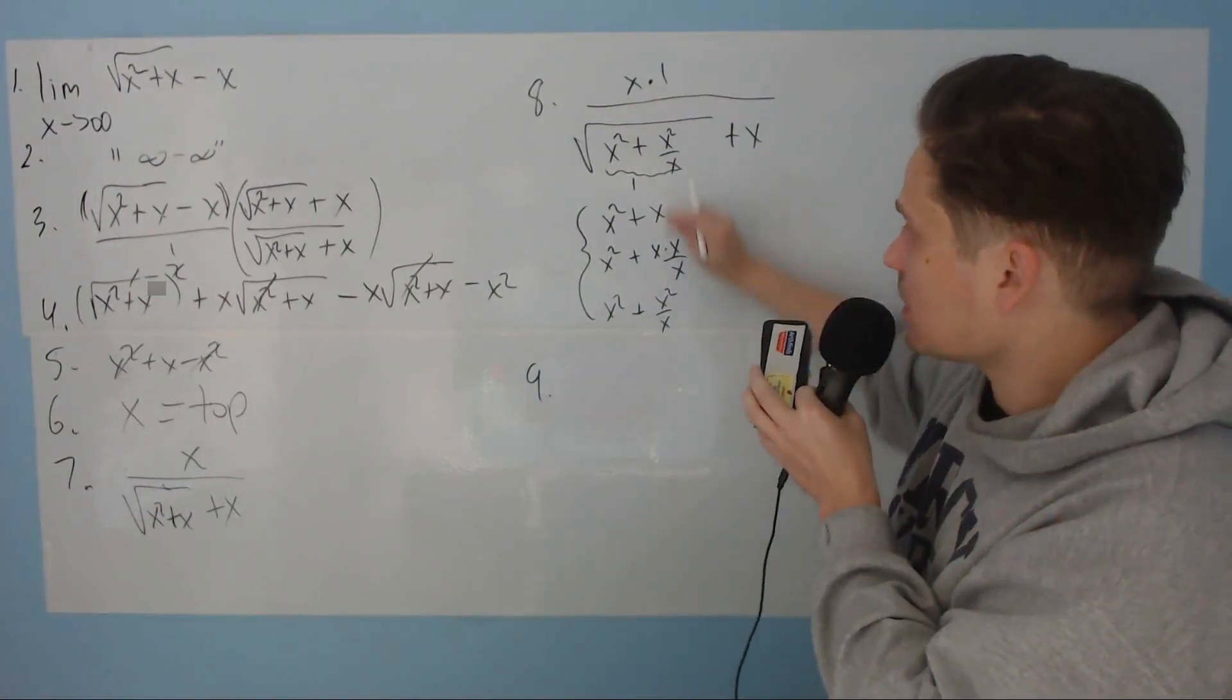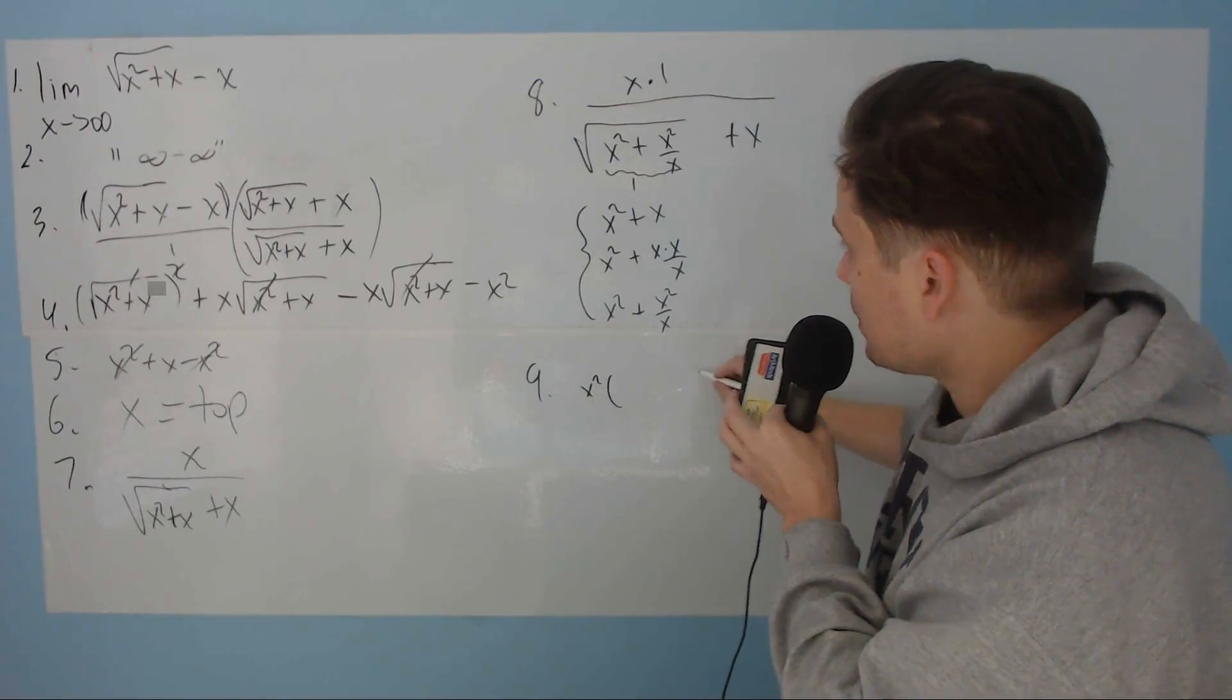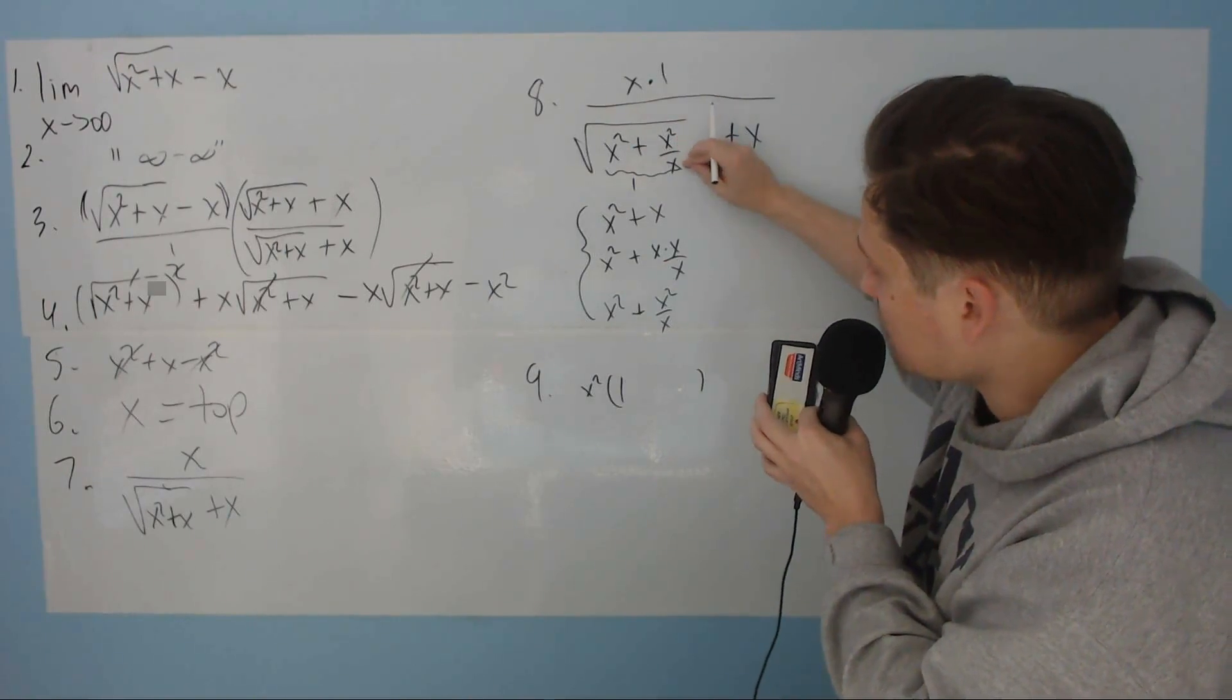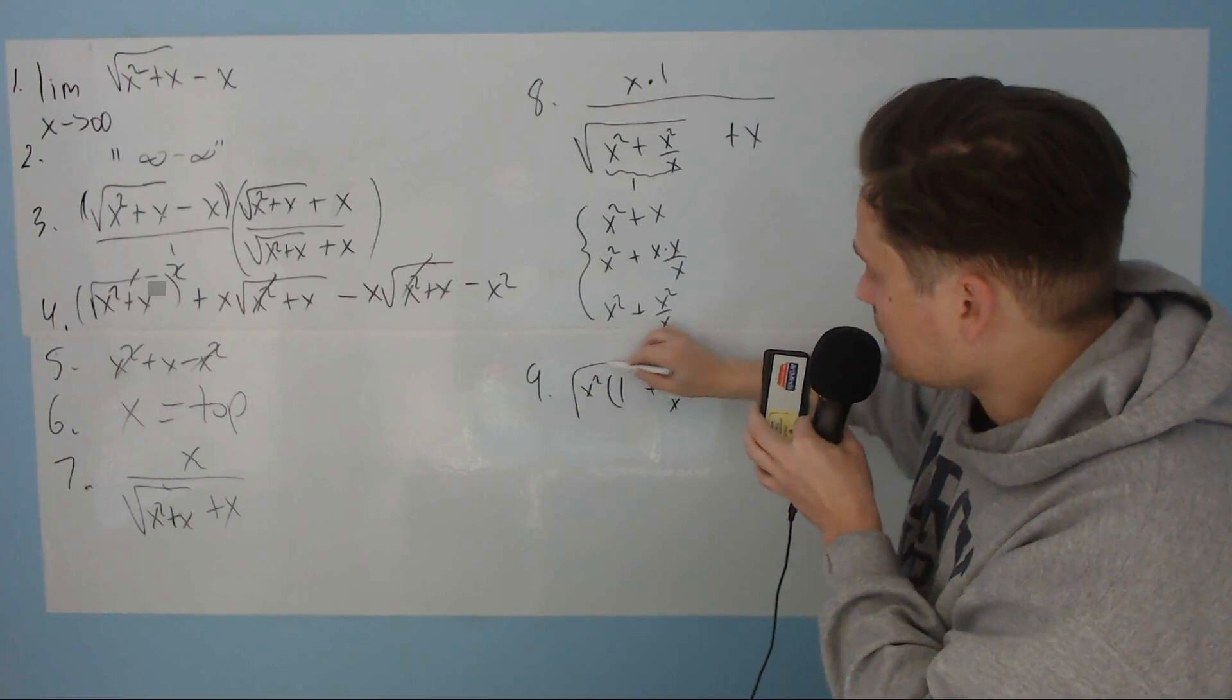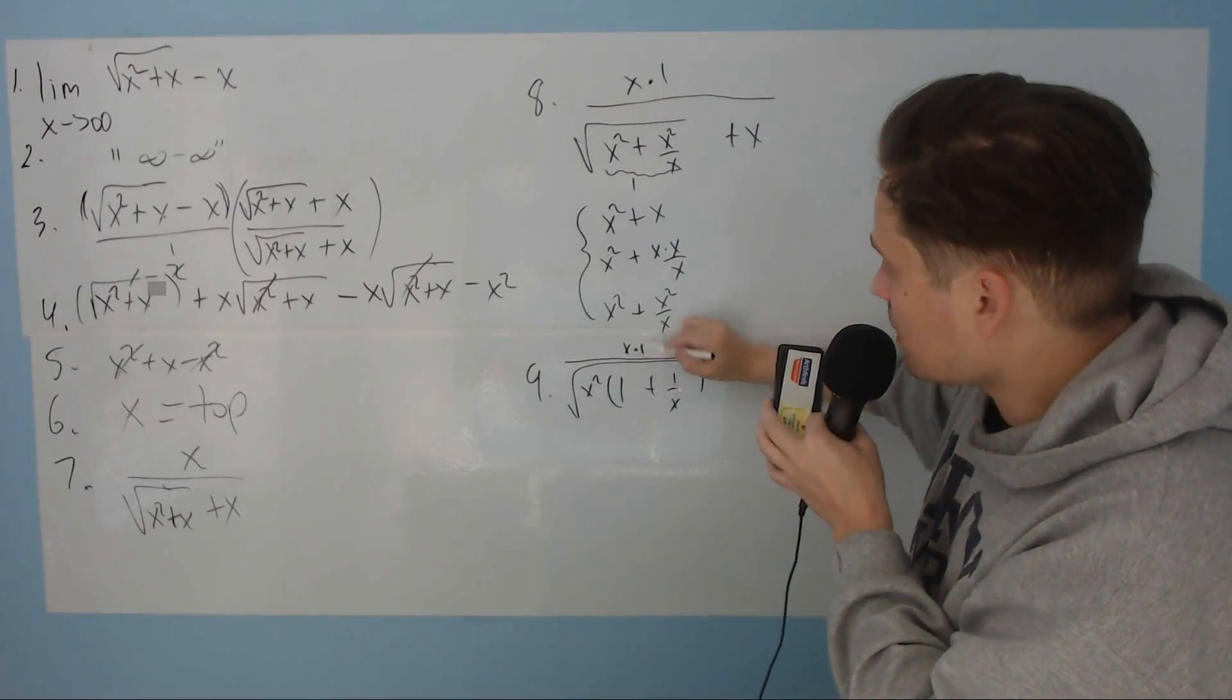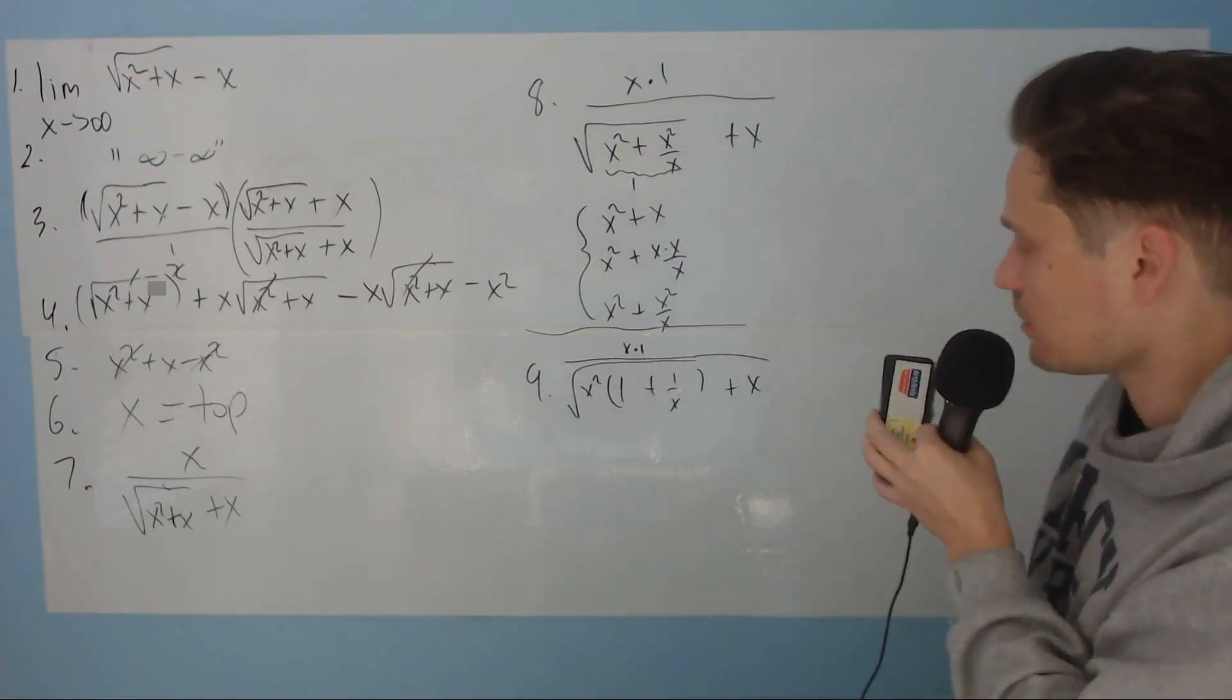So when I do that, at step 9, I'm going to now factor from the root symbol x squared. When I pull an x squared out of here, I have one left. When I pull an x squared out of here, there's an x in the bottom left. So it becomes 1 plus 1 over x under the root symbol. And all of this now is still under x times 1. And here you still have that plus x at the end. We're getting closer.